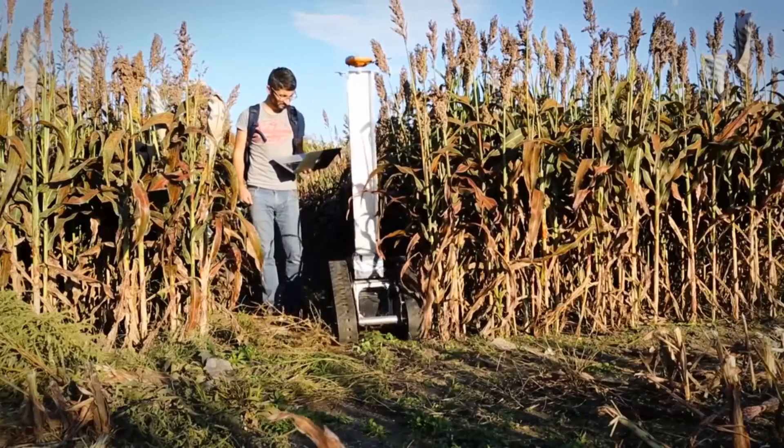As the robot travels between the rows, it uses hyperspectral, high-definition, and thermal cameras, weather monitors, and pulse laser scanners to capture phenotypic information such as stem diameter, height, and leaf area. It also assesses environmental conditions such as the temperature and moisture of the soil.